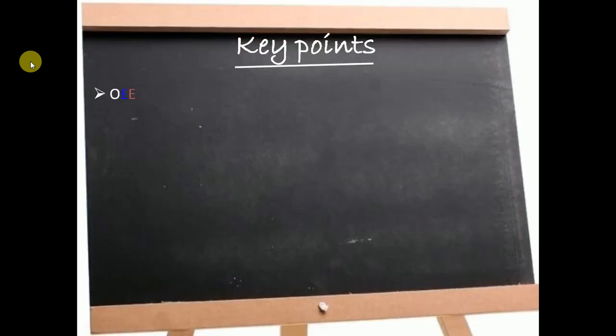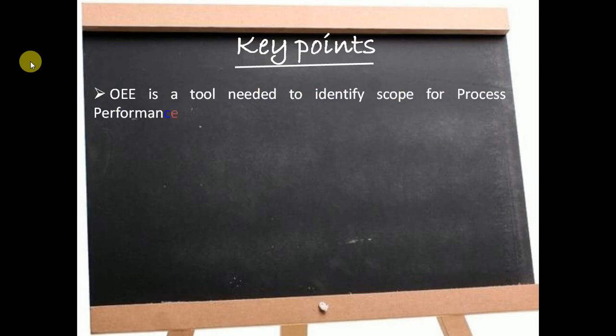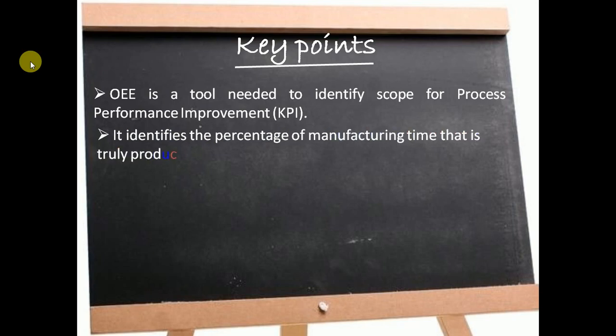In brief, OEE is not an absolute measure, but it is a tool needed to identify scope for process performance improvement. It is also known as KPI, that is Key Performance Indicator, in conjunction with lean manufacturing efforts to provide an indicator of success. It gives the percentage of time completely dedicated only for production.